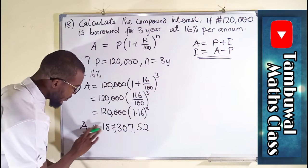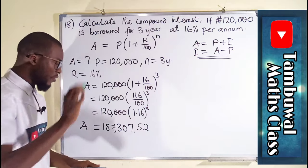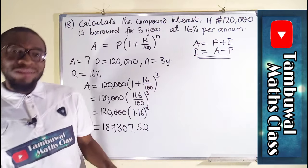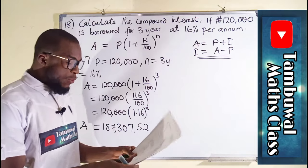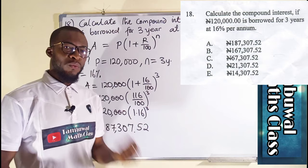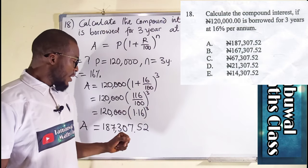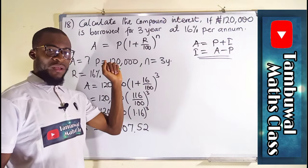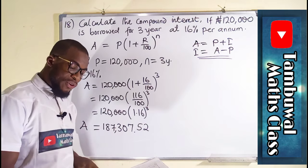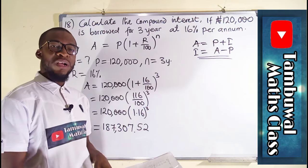So we multiply by 120,000, and we obtain equal to 187,307.52. This is what we have obtained as our amount, and you can see it is available here from the option. But that's not what we are looking for. What we are looking for is the interest, not the amount. So by getting this, you realize it is from the option, you take it, you are taking the wrong answer.